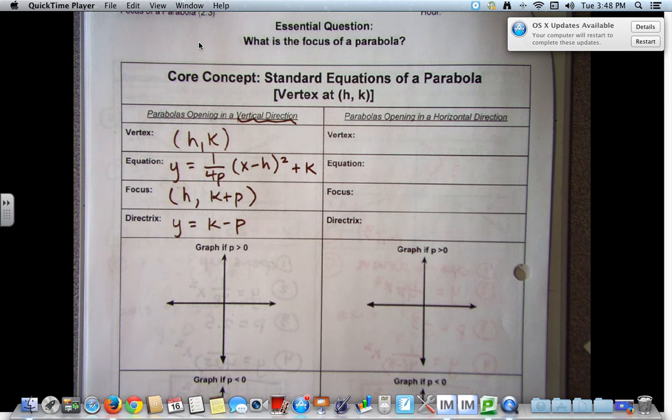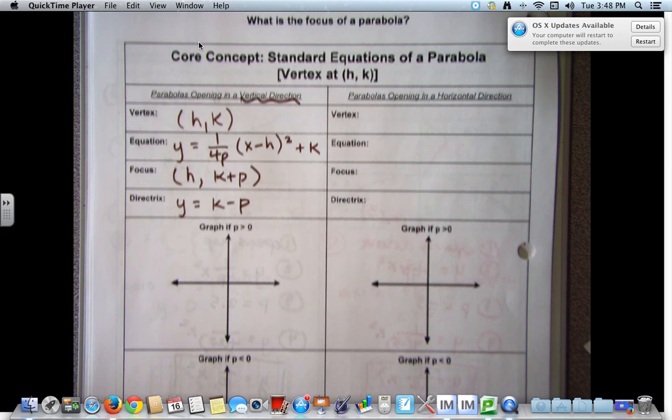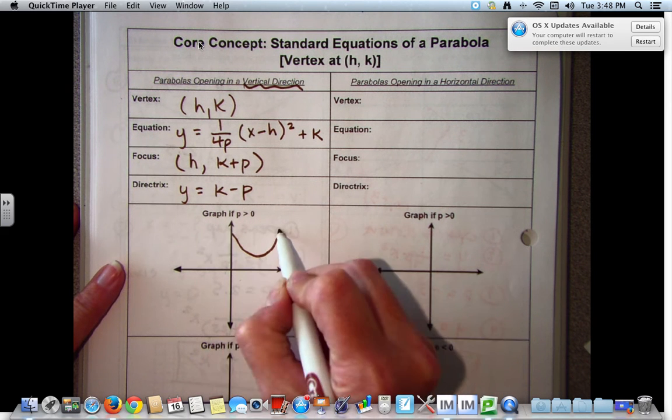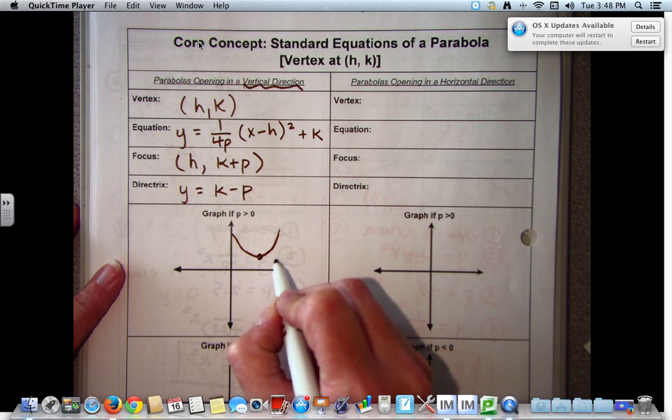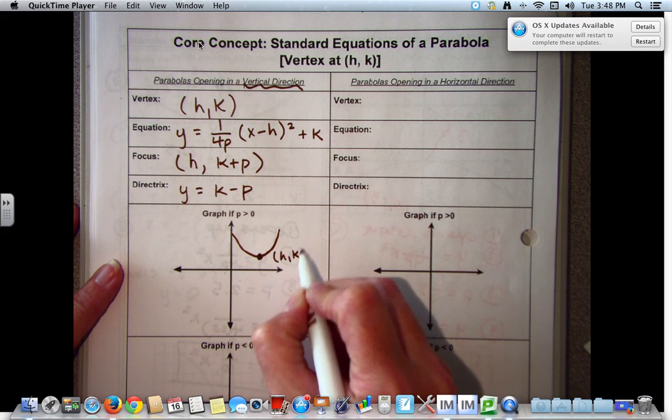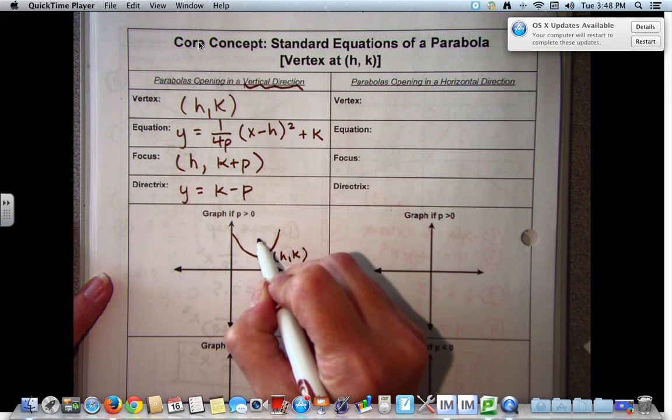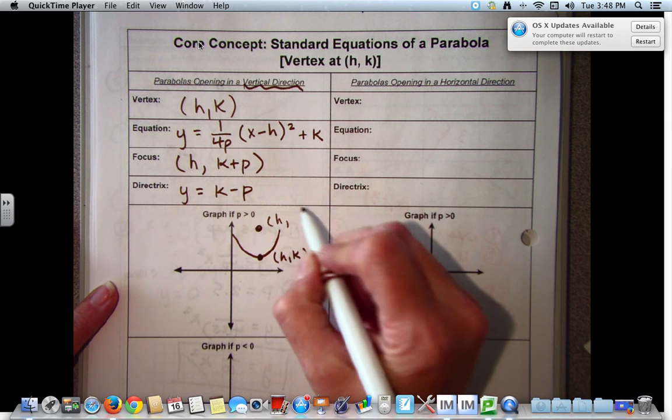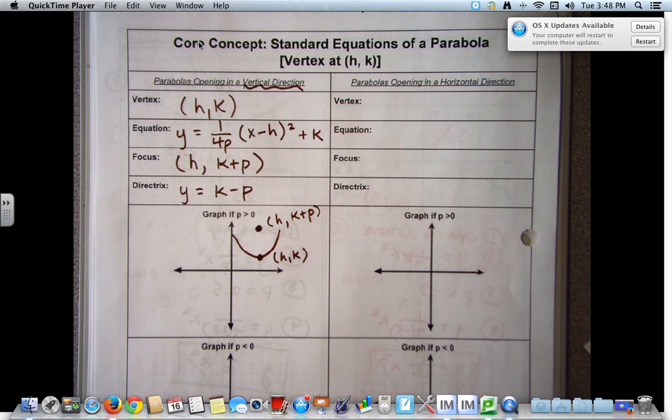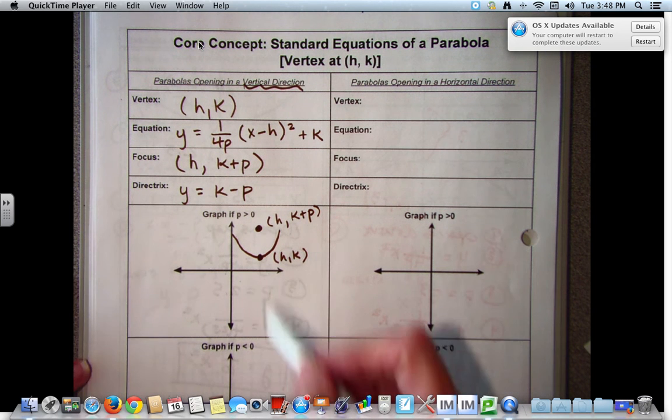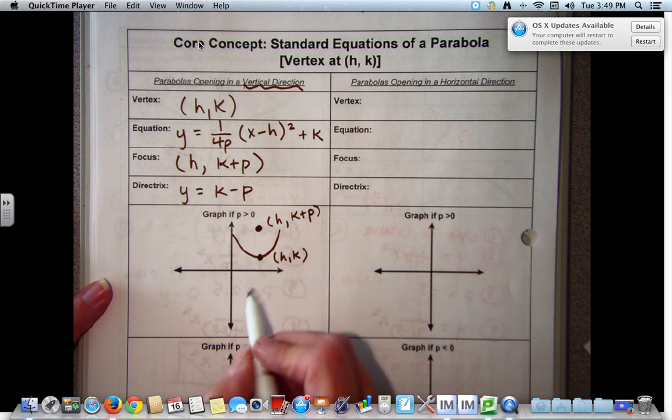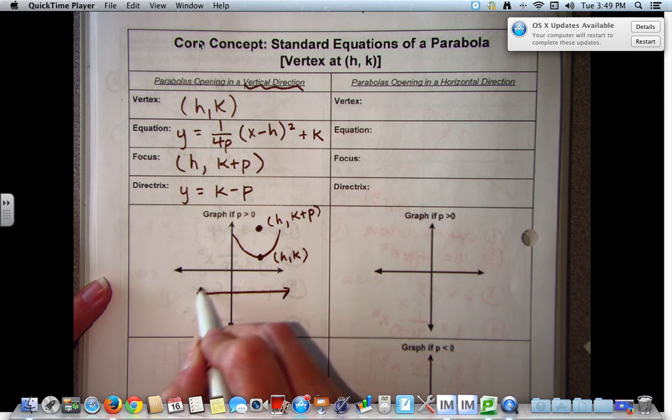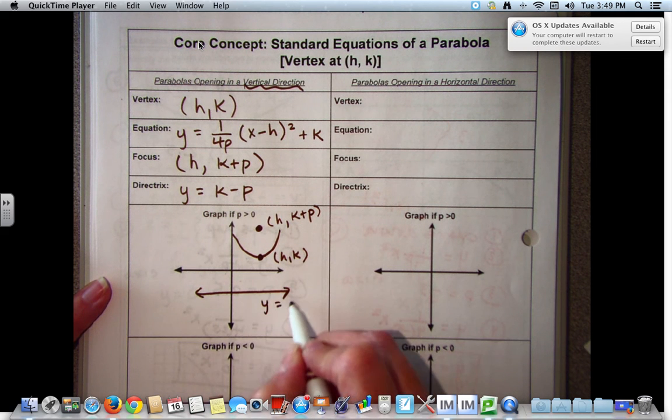It looks similar to yesterday and it looks similar to the h and k items that we were looking at previously. So we have a parabola that's opening up. Here's our vertex at h, k. We have a focus at h, k plus p. And our directrix is opposite direction, equal distance from the vertex to the focus and it's a line. This is y equals k minus p.